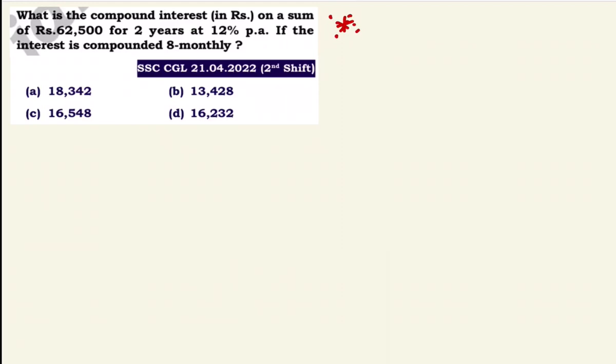Key concept: interest compounded 8-monthly. We know half-yearly and quarterly compounding. For 8-monthly: if rate is 10% per annum for 12 months, then for 8 months we adjust proportionally.